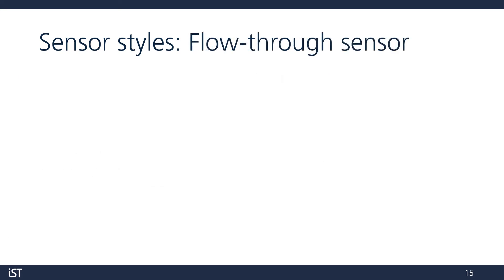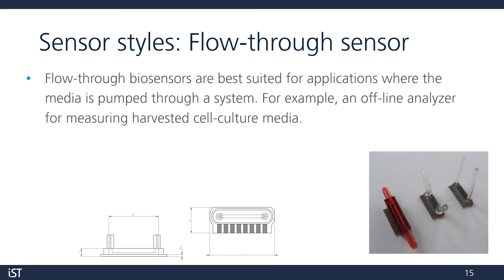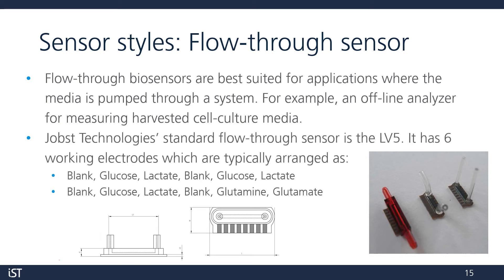Next, we have our flow-through cells. The flow-through biosensors are best suited for applications where media is pumped through a system — for example, an offline analyzer for harvested cell culture media. The LV-5 flow-through sensor is available with a few different flow cell geometries and has two standard electrode arrangements. First, we have blank, glucose, and lactate electrodes, two of each, giving us two glucose and two lactate concentration outputs in our software. Next, we have the 4-analyte LV-5, which gives us glucose, lactate, glutamine, and glutamate concentrations, all on one chip.